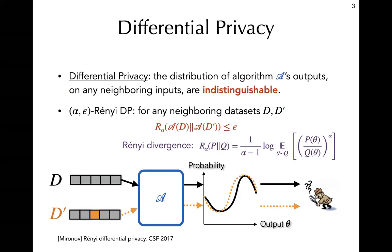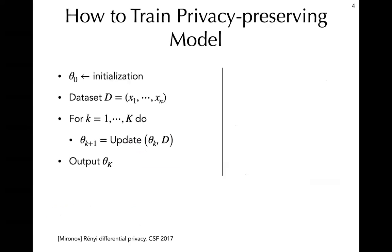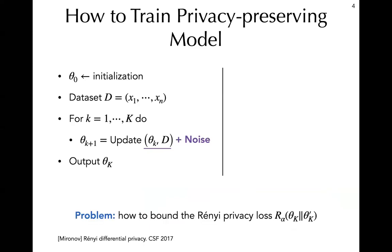So, how do we obtain differentially private training algorithms? Modern machine learning algorithms are often iterative, and in each iteration the model is updated based on the previous model and the sensitive data. We can achieve differential privacy by adding carefully calibrated noise to this sensitive update. The question is, how much exactly is the privacy loss of the resulting algorithm?